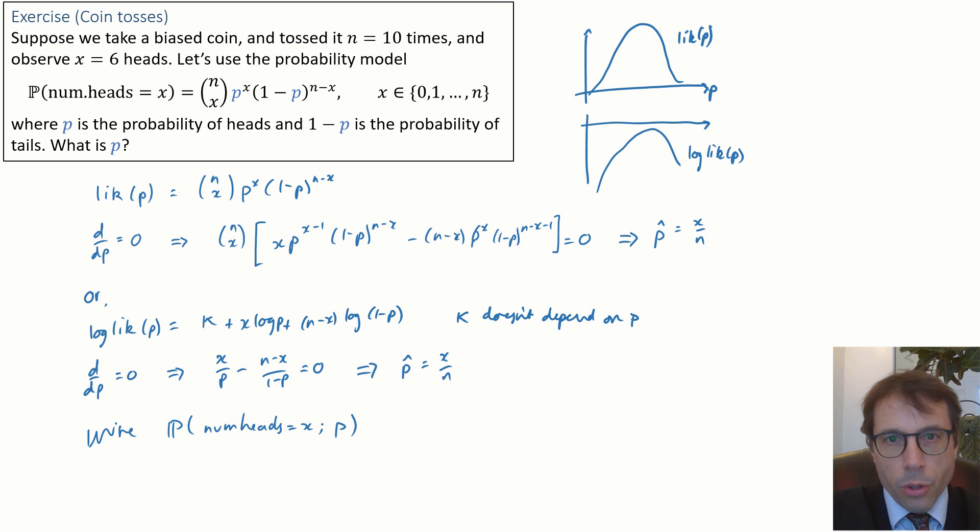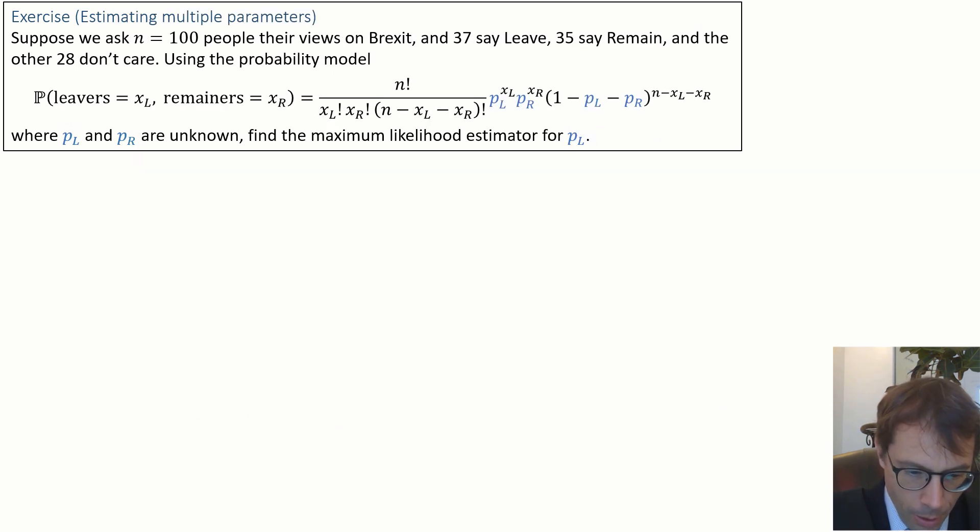Next example will show us what to do when the model has more than one parameter. Here's the example. Suppose we ask n equals 100 people their views on Brexit. 37 say leave, 35 say remain, and the other 28 don't care. Use the probability model blah blah blah with unknown parameters p_L and p_R. You may recognize this equation as the probability mass function of a multinomial distribution. But if you don't recognize it, it doesn't make any difference. We want to find the maximum likelihood estimator for p_L.